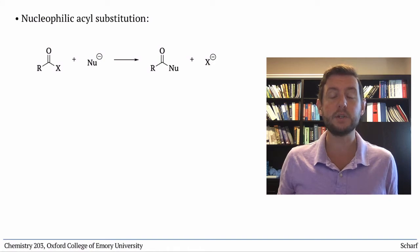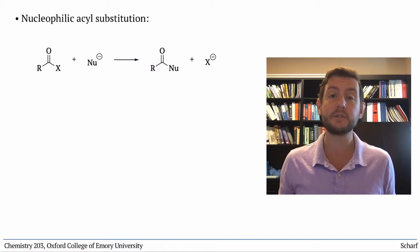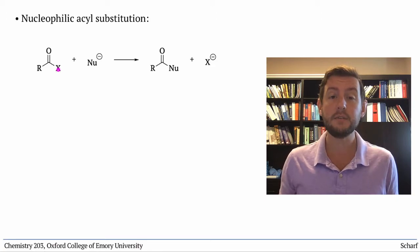Nucleophilic acyl substitution turns one carboxylic acid derivative into another by substituting a leaving group attached to a carbonyl carbon, which is sp2 hybridized, with a nucleophile.